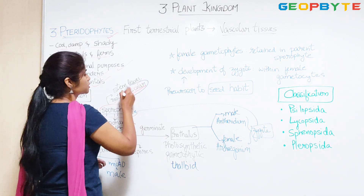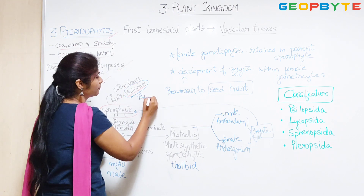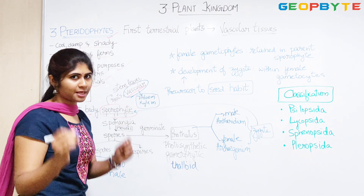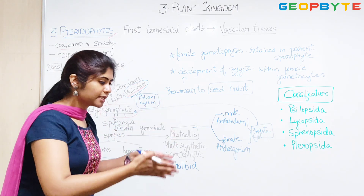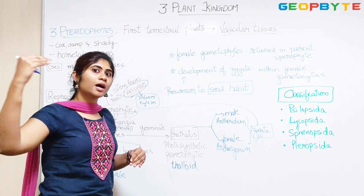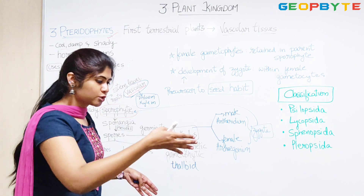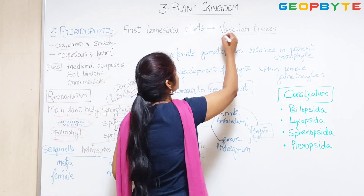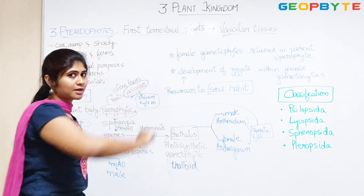Vascular tissues — we will study in detail later, but for now phloem and xylem are the two important vascular tissues in plants, observed in higher plants. Now, algae, Bryophytes and Pteridophytes are considered lower plants, as evolution proceeded toward higher plants. From algae to Bryophyte to Pteridophyte, for the first time we have seen vascular tissues appearing in Pteridophytes.